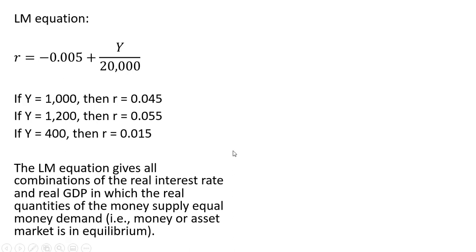So the LM equation gives all combinations of the real interest rate and real GDP in which the real quantities of the money supply equal money demand. That is, the money or asset market is in equilibrium.